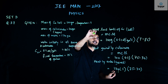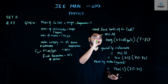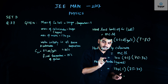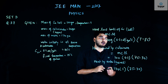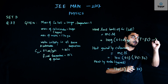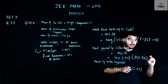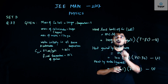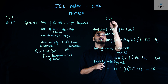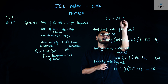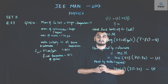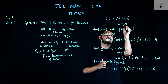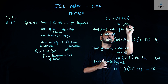The heat lost by the copper ball equals the heat gained by the calorimeter plus the heat gained by the water — that is, equation one equals equation two plus equation three. Solving this gives the value of T as 885 degrees Celsius.